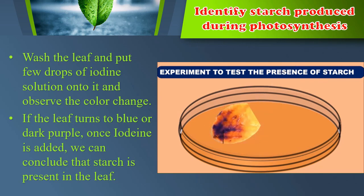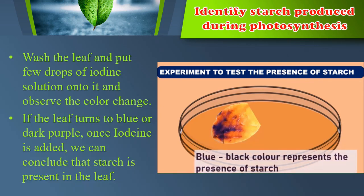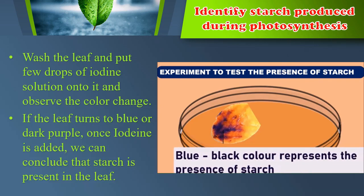Wash the leaf and put a few drops of iodine solution onto it and observe the color change. If the leaf turns blue or dark purple once iodine is added, we can conclude that starch is present in the leaf.